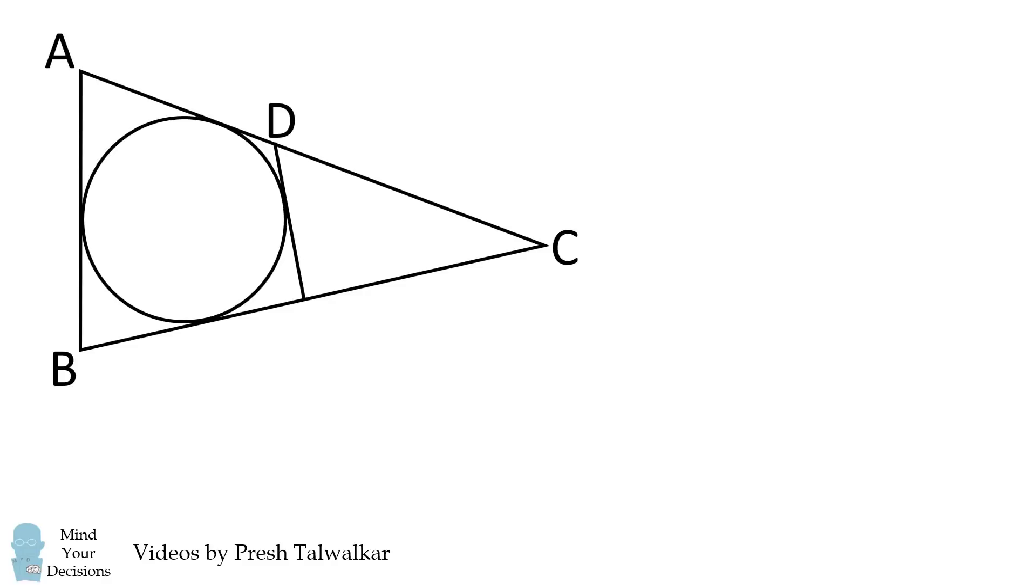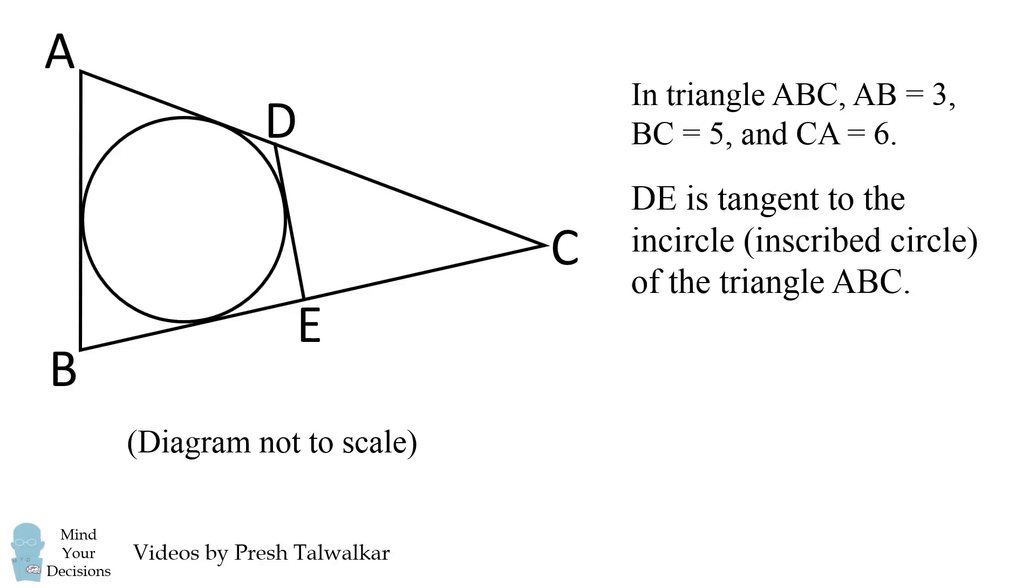Here's a really neat problem from a German math competition. Start out with triangle ABC and its inscribed circle. We'll draw a tangent to this inscribed circle and label its points D and E. The diagram is not to scale. In triangle ABC, AB is equal to 3, BC is equal to 5, and CA is equal to 6. DE is tangent to the in-circle or inscribed circle of the triangle ABC. What is the perimeter of triangle CDE?